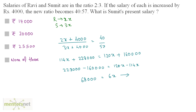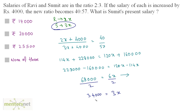Now what we want is Sumit's present salary. Sumit's present salary is 3x and we have the value of 6x as 68000. We can get the value of 3x by dividing both sides by 2, so 3x equals 68000 divided by 2, which is 34000. So Sumit's present salary is 34,000 rupees. It's not in the options, so our correct answer is none of these.